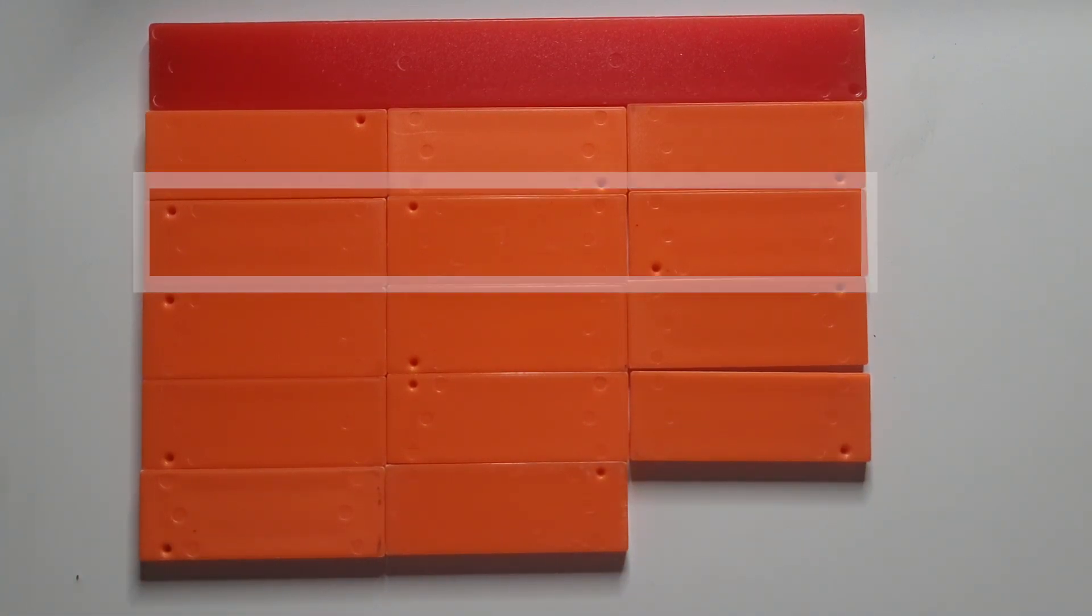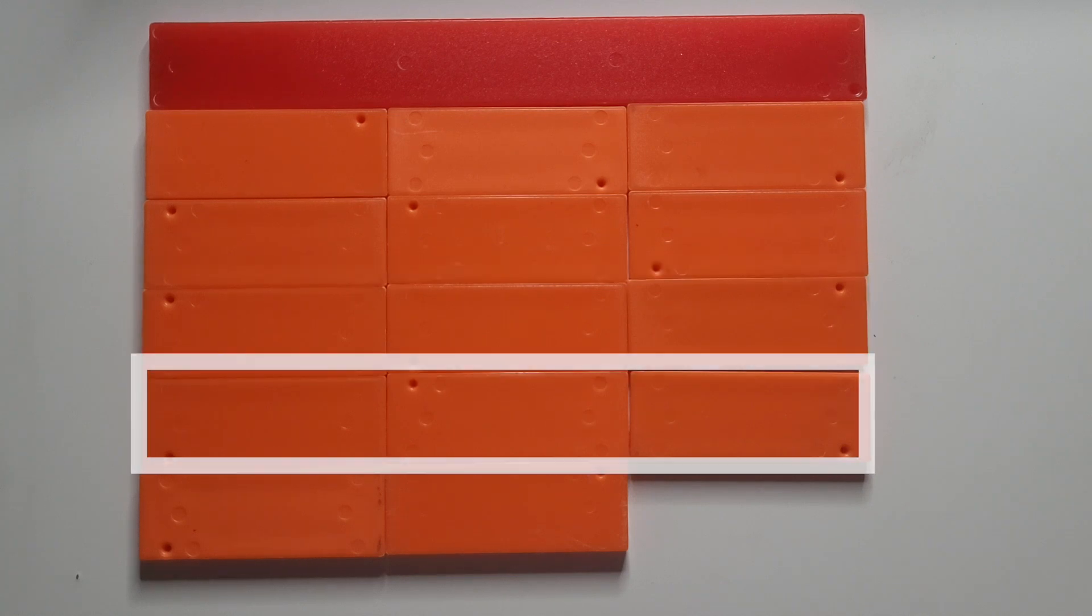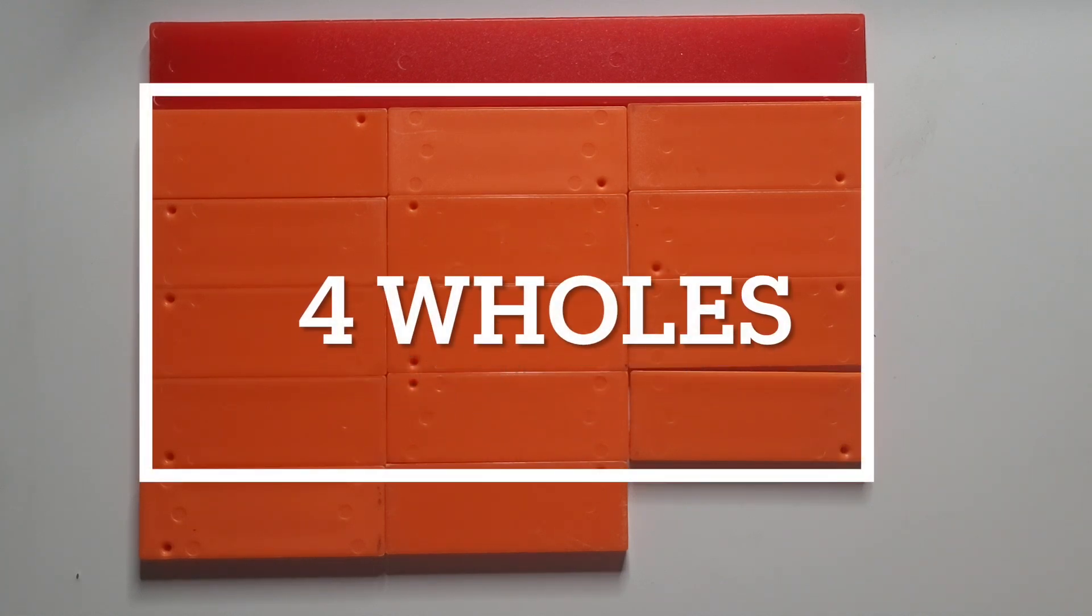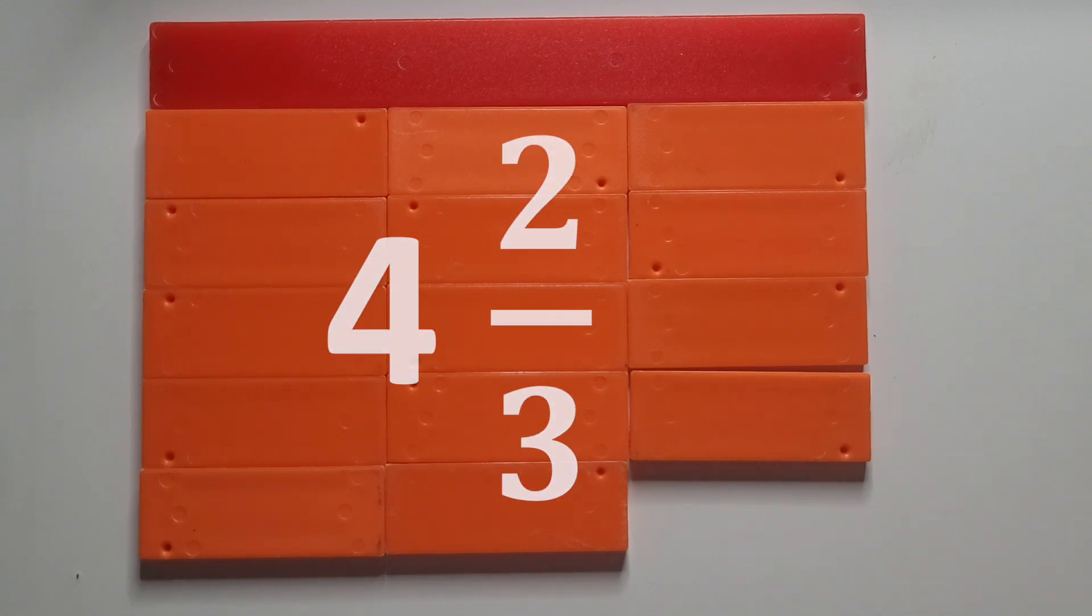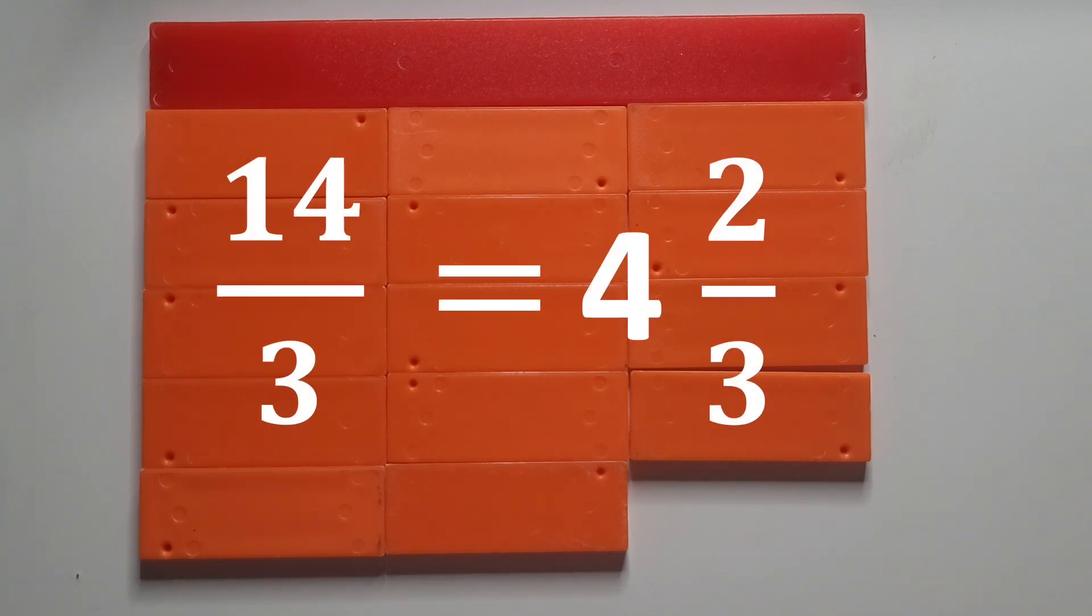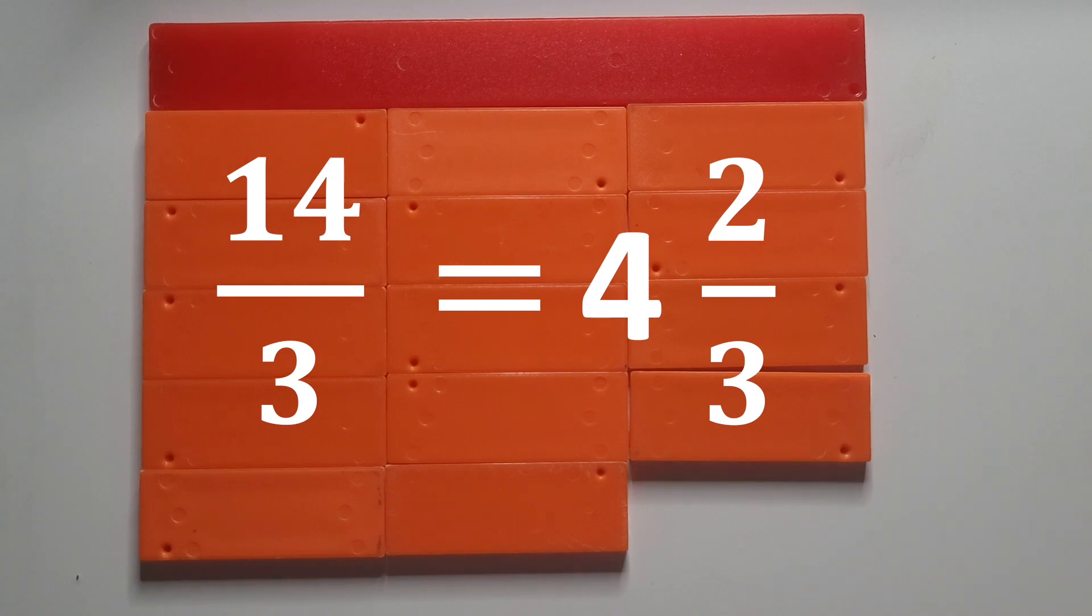One, two, three, four. We made four wholes from the 14 thirds. And remember there are an extra two thirds. We don't have enough to make another whole. So what is our new mixed number? Four and two thirds. 14 thirds is equal to four and two thirds.